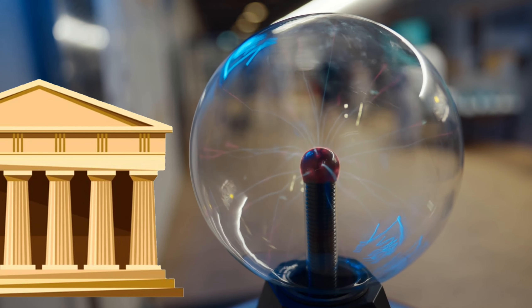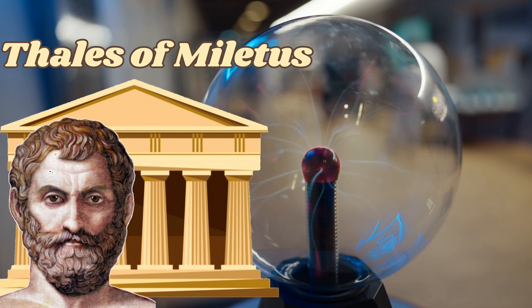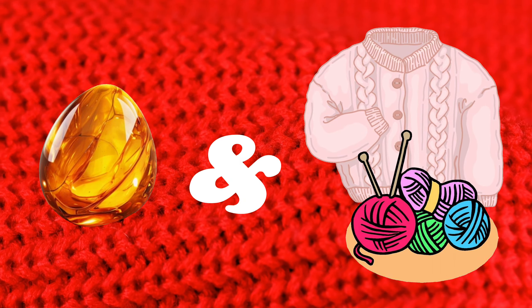The discovery of static electricity dates back to the time of the ancient Greeks. The philosopher Thales of Miletus made the first observation of static electricity. He identified strange behaviors based on friction between amber and fabrics such as wool, generating an attractive force on objects.